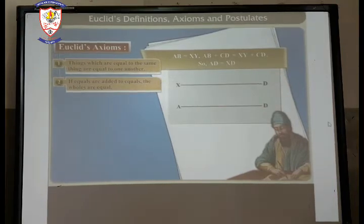The second: if equals are added to equals, the wholes are equal. For example, if AB is equal to XY, AB plus CD is equal to XY plus CD. It means that when we are adding CD on both the sides, AB is equal to XY. When we are adding CD on both the sides, it becomes AB plus CD which is equal to XY plus CD. So AB plus CD becomes AD and XY plus CD becomes XD.